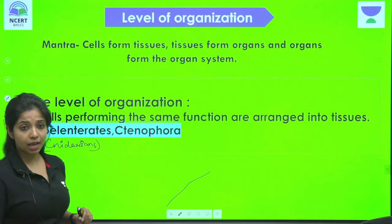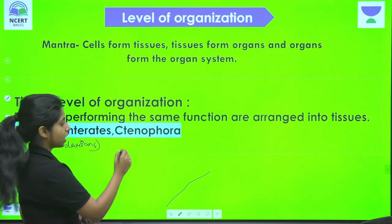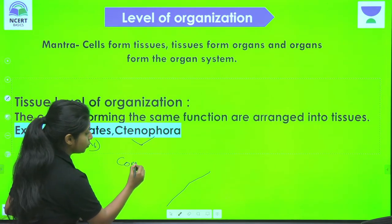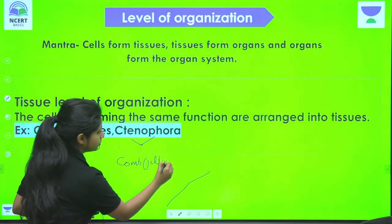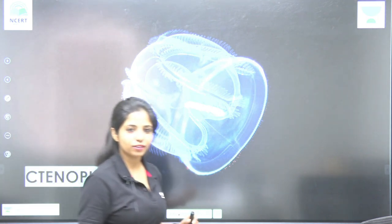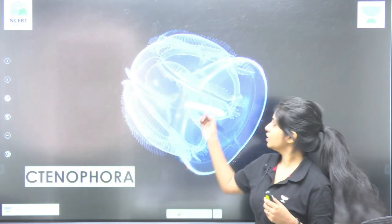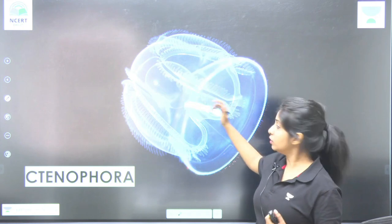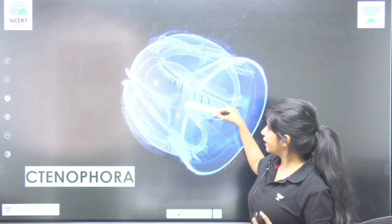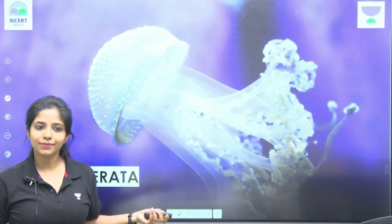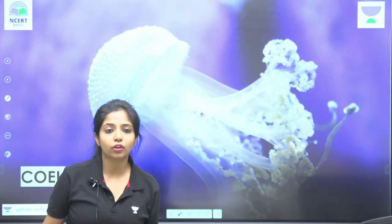Ctenophora — something I'm adding now — are also known as comb jellies. They are very beautiful, bioluminescent organisms, and they look like a comb, which is why they are called comb jellies. Both Coelenterata and Ctenophora have tissue level of organization.